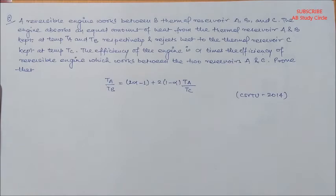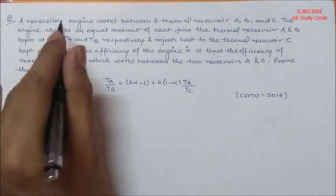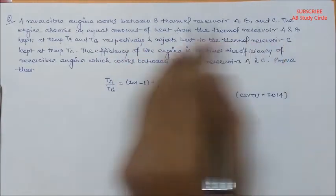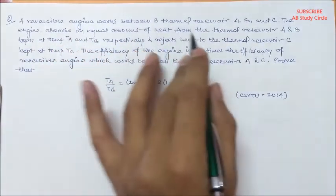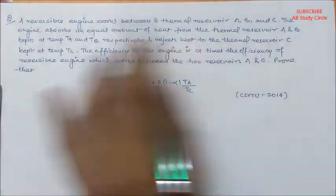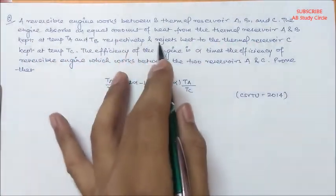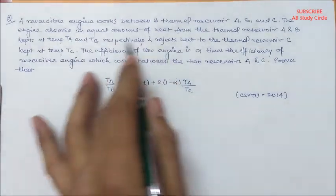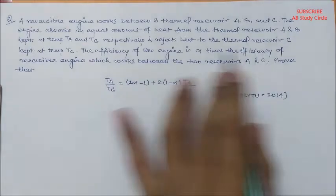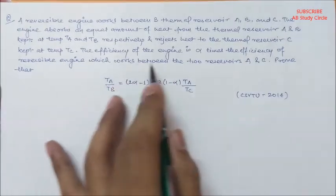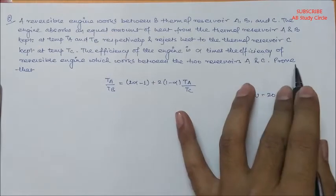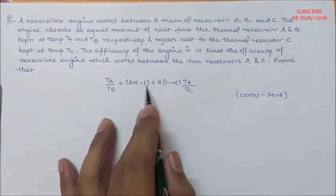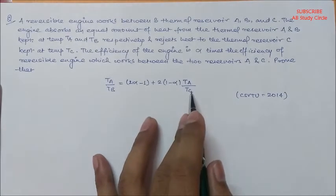The question is like this. A reversible engine works between three thermal reservoirs A, B and C. The engine absorbs an equal amount of heat from thermal reservoirs A and B kept at temperatures TA and TB respectively, and rejects heat to thermal reservoir C kept at temperature TC. The efficiency of the engine is alpha times the efficiency of a reversible engine which works between two reservoirs A and C. Prove that TA/TB = (2α - 1) + 2(1 - α)(TA/TC).